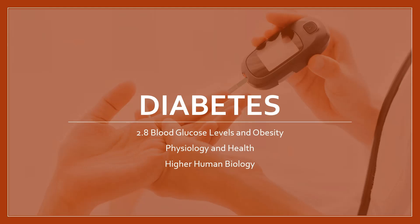In this video we're continuing blood glucose levels and obesity, key area 2.8. We've seen the normal regulation of blood glucose, and what happens if we can't do this process, and diabetes results.